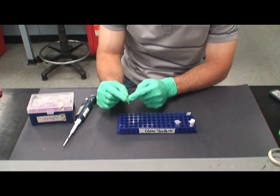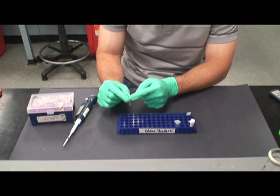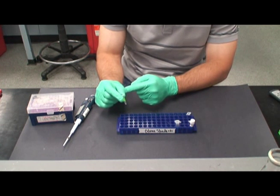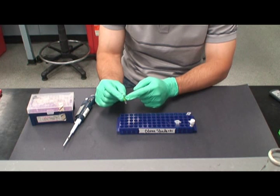A brief centrifuge will ensure that all the liquid is at the bottom of the tubes. The tubes are then incubated for 10 minutes at 37 degrees Celsius.